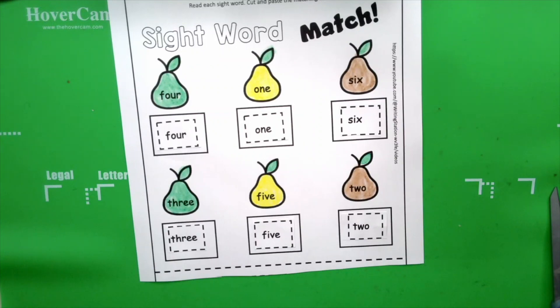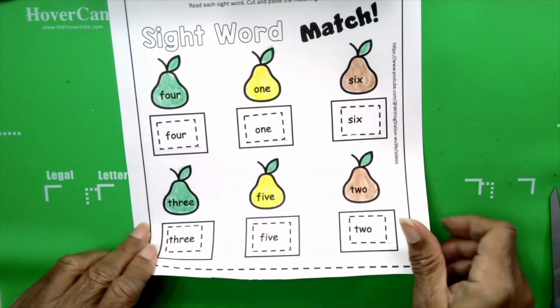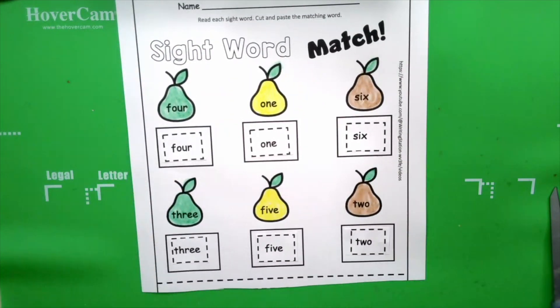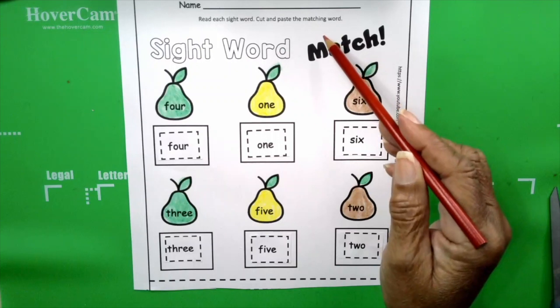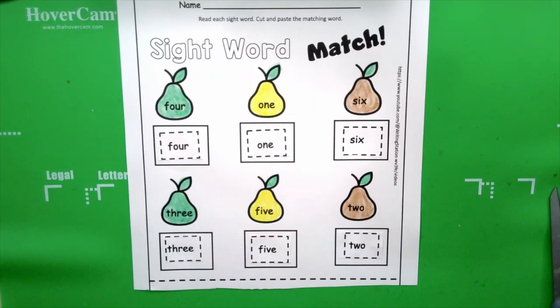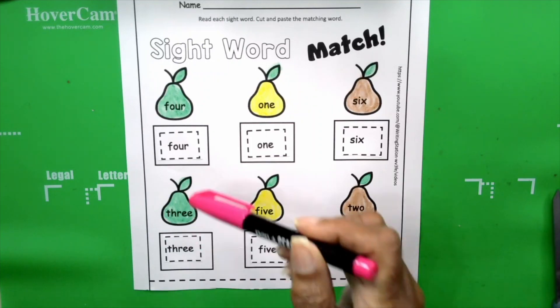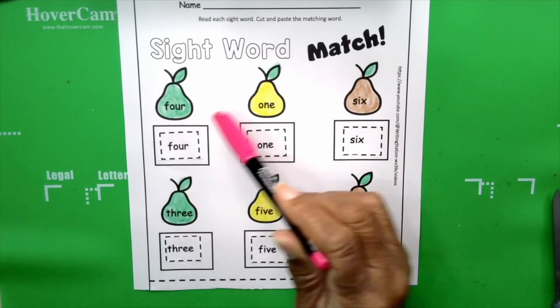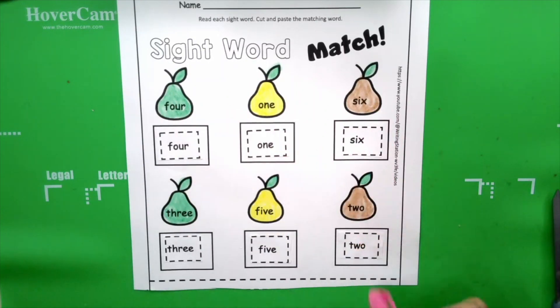Okay, very good, boys and girls. We're done. I know you did an excellent job. Okay, very good. So let's just go over one more time. Review what we did. We read our directions that said read each sight word. Cut and paste the matching words. And that's exactly what we did. These are our number words. And we cut out and we matched all the numbers. Very good, boys and girls. I hope you enjoyed the lesson. See you next time.